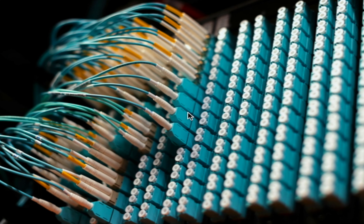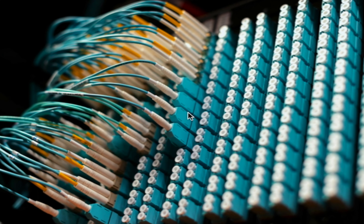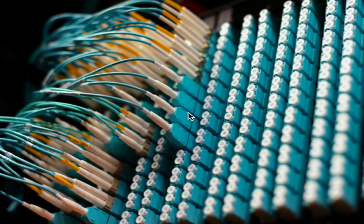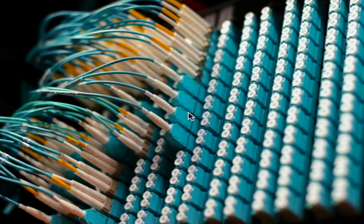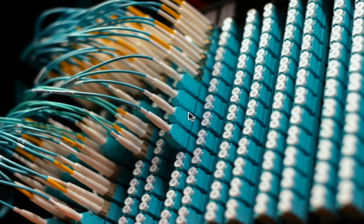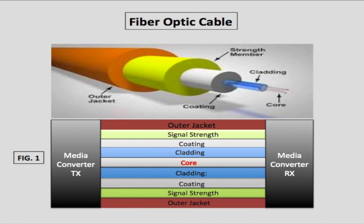Let's start with the basics. Unlike traditional copper cables, fiber optics is the medium used to transmit light signals that carry data, making them faster and more efficient. In this diagram, figure one shows the fiber optic cable in its layers. The core is the central area of the fiber where light travels. Surrounding the core is a cladding, which reflects the light back into the core to prevent it from escaping.